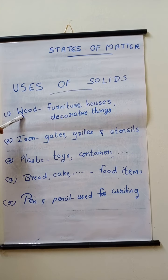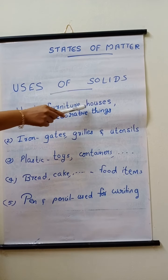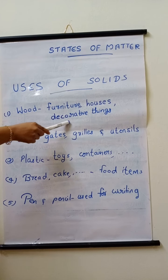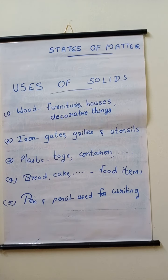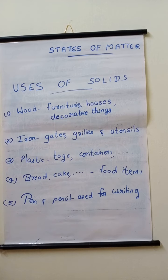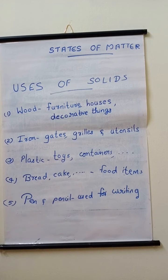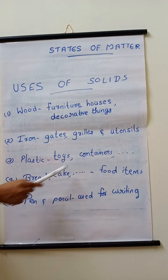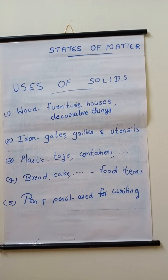First one is wood. Wood is a solid. It is used for making furniture, houses and many other decorative things. Iron is used for making gates, grills and utensils. Plastic is used for making toys, containers and many other things. Most food items like bread, cake and idli are solid. We write with pen and pencil.